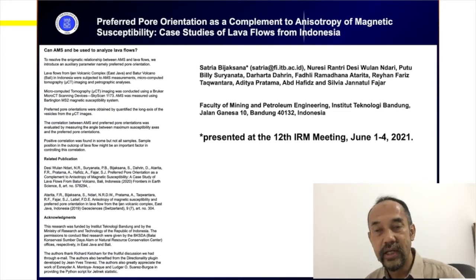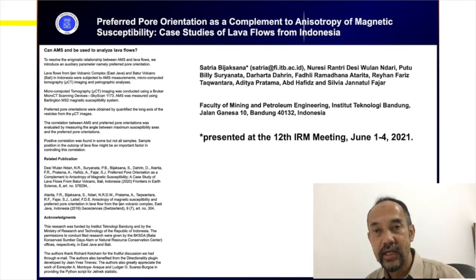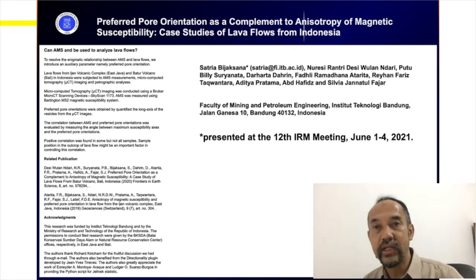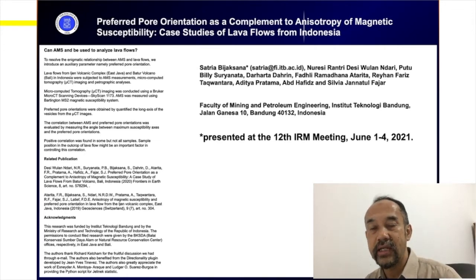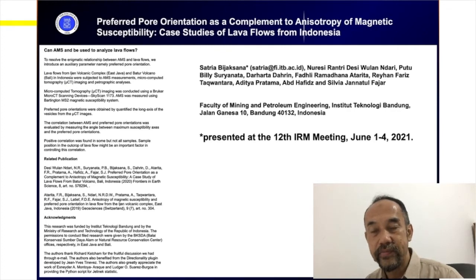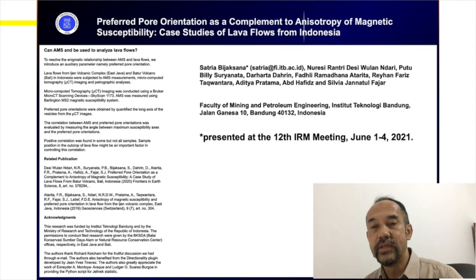On this occasion, we would like to report a method called preferred pore orientations, which could be used to complement AMS measurements. The preferred pore orientation is basically measured using micro CT scan, or micro computed tomography, on lava flow samples, which were also subjected to AMS measurements.